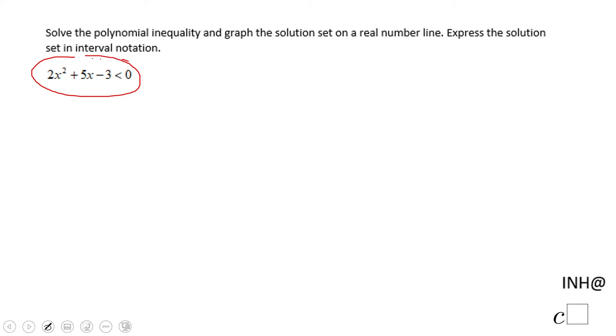The first thing you want to do is take this inequality and make it equal to zero. You want to find out first when this polynomial or quadratic in this case equals zero. For that reason, we're going to use factoring.